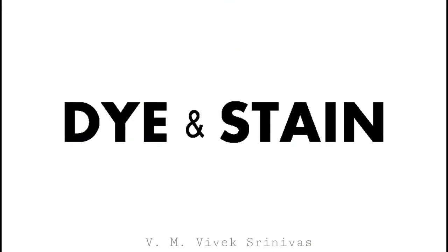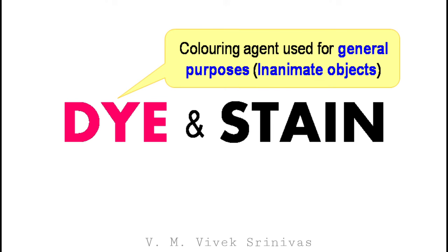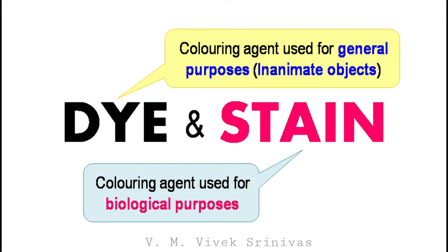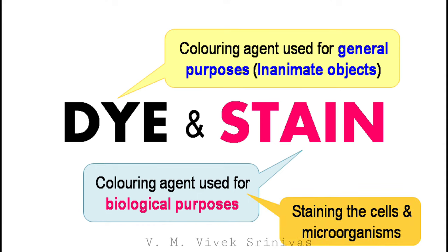First, we will see about what is the difference in the terms of dye and stain. Both are coloring agents. Generally, dyes are coloring agents used for general purposes, that is, used against inanimate objects. But stains are coloring agents used for biological purposes, like staining the cells, the bacteria, and other microorganisms.